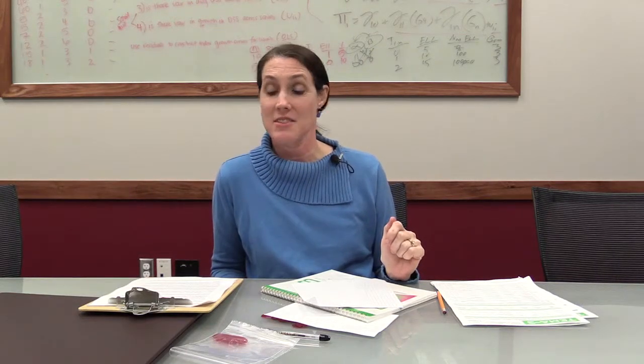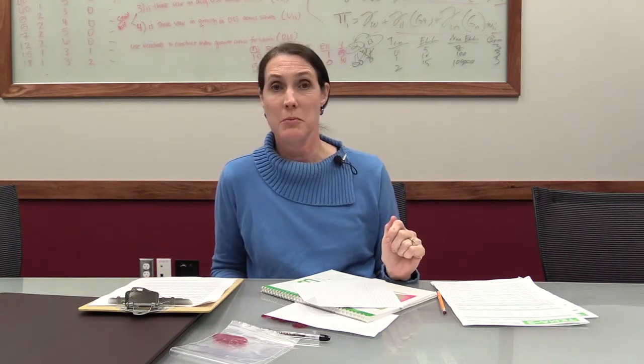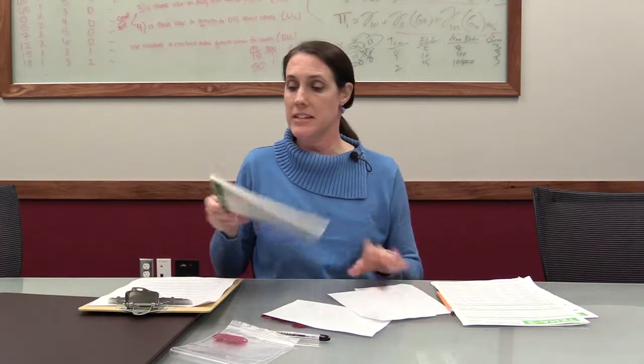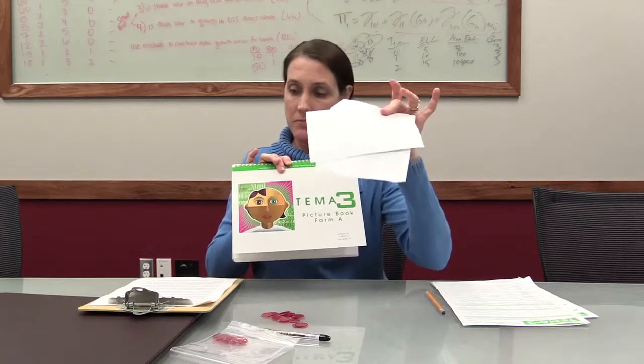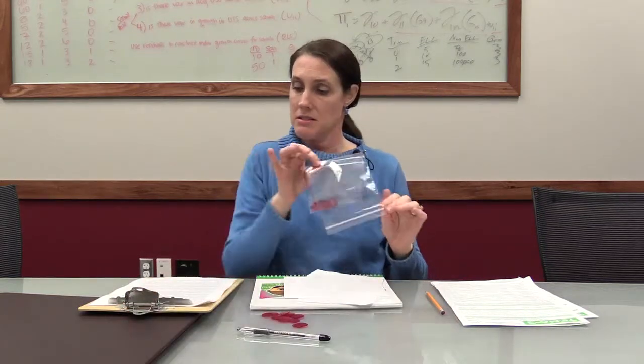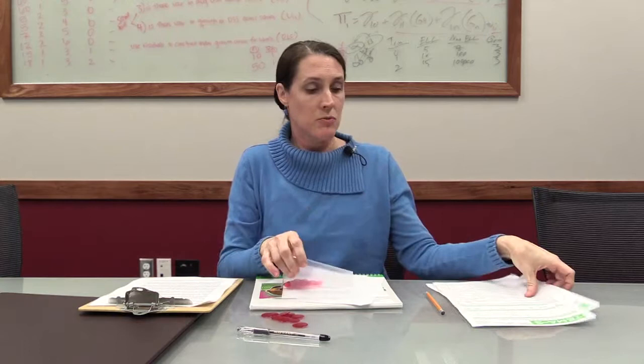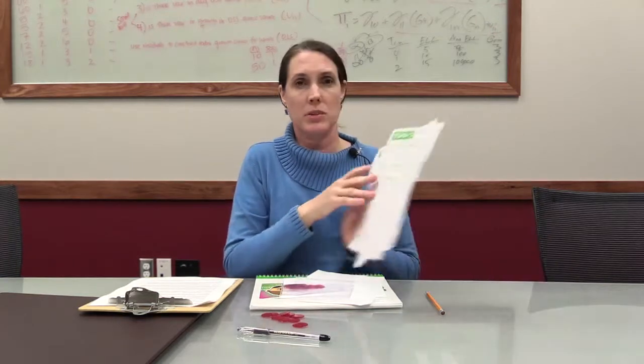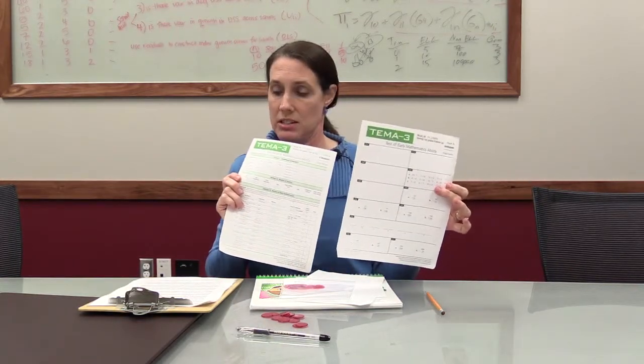Hello to all of you testing for the OEL project. Let's have a look at how to administer and score the TEMA. To give the test, you should all have the TEMA A book, three large index cards, 25 tokens, the examiner record book — which we also call the score sheet — and the student worksheet.